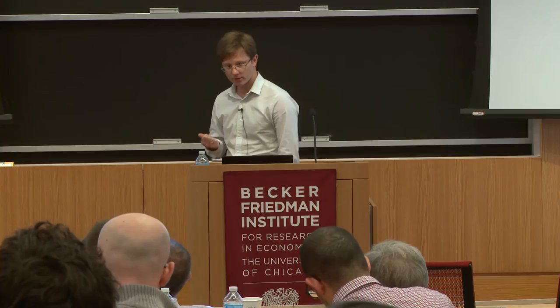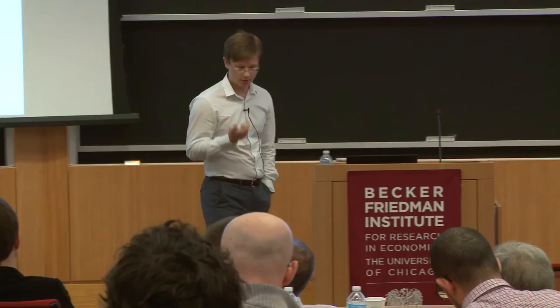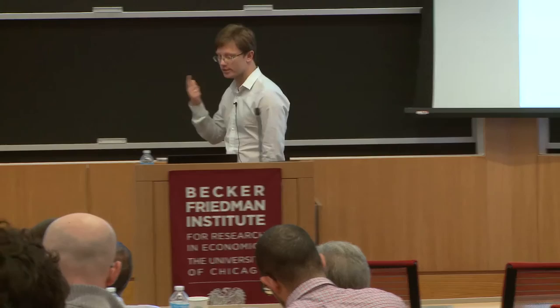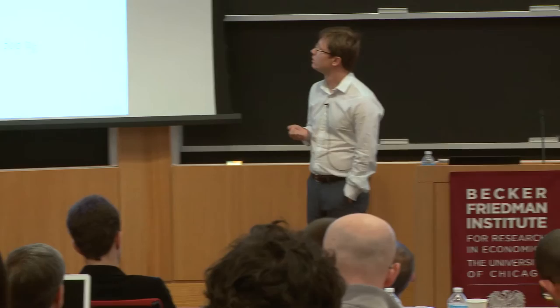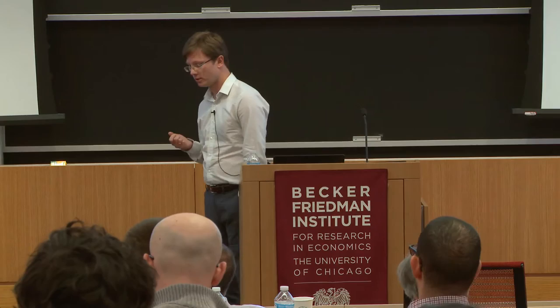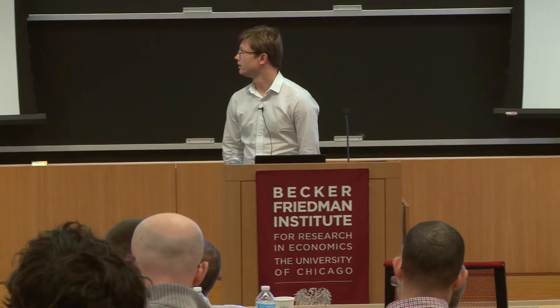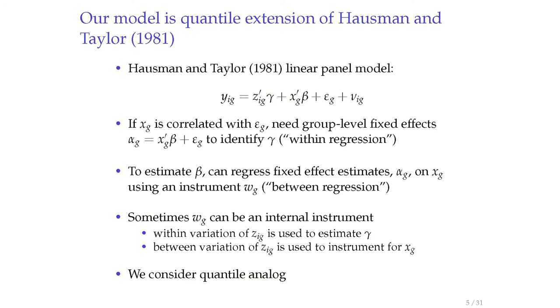When you estimate gamma, you only use the within variation, but then you can use the exogenous between variation to instrument for endogenous x. If you have enough exogenous between variation, you don't need external instruments—the model might be identified without any external instruments. This is also going to be the case in our quantile extension, where we do basically the same steps but in the quantile framework.